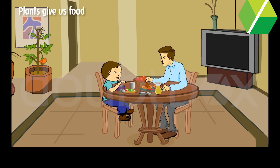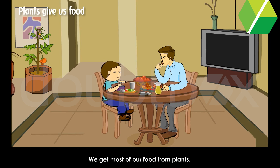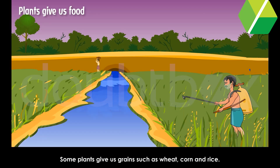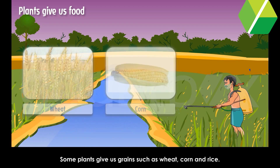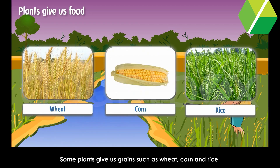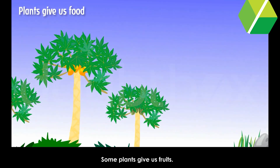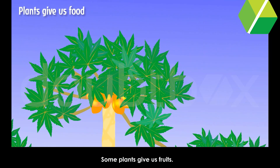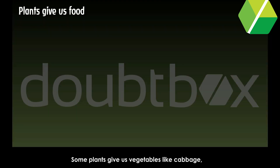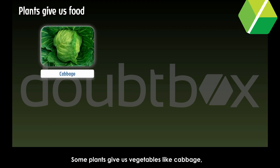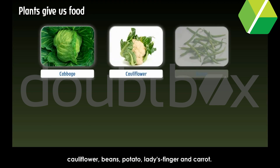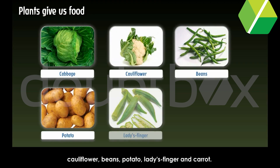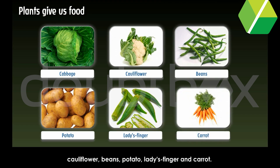Plants give us food. We get most of our food from plants. Some plants give us grains such as wheat, corn and rice. Some plants give us fruits. Some plants give us vegetables like cabbage, cauliflower, beans, potato, lady's finger and carrot.